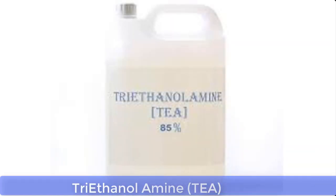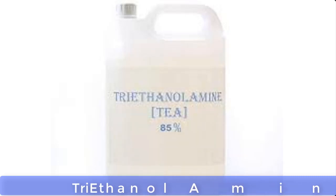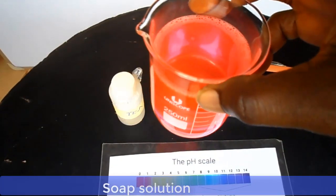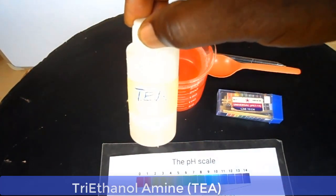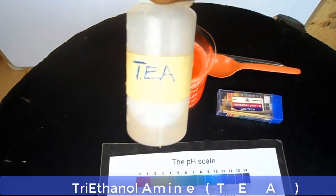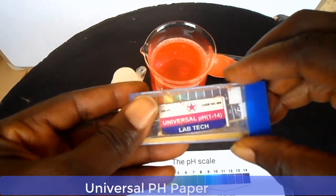In this demonstration we are going to be using triethanolamine (TEA), which is a pH adjuster. Here we have a liquid soap solution, this is triethanolamine TEA, this is universal pH paper, and this is a pH kit.